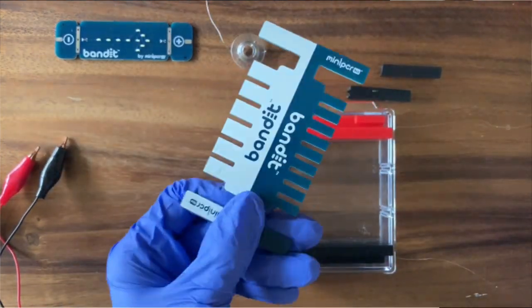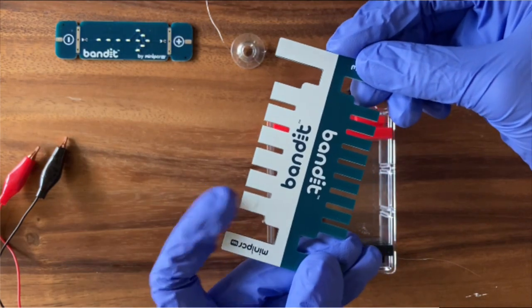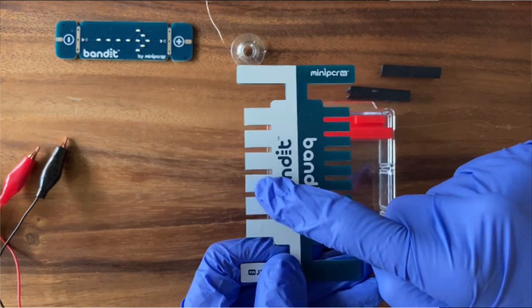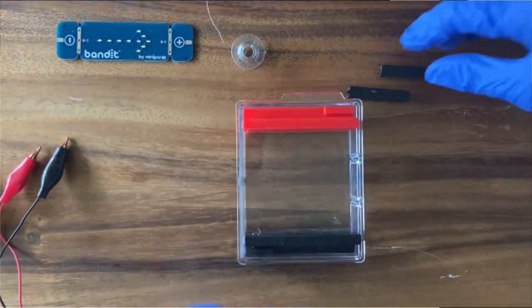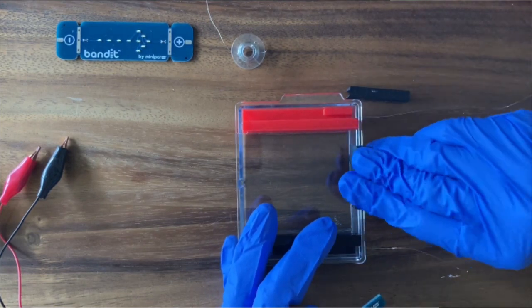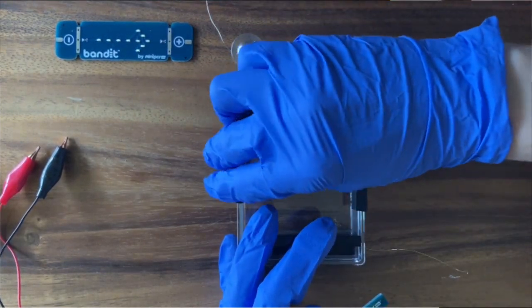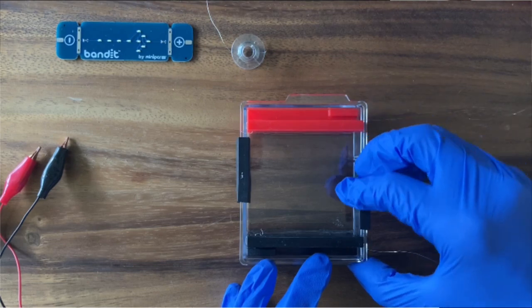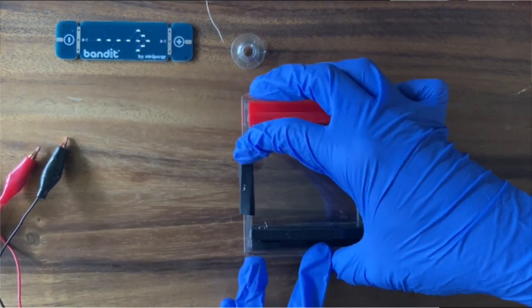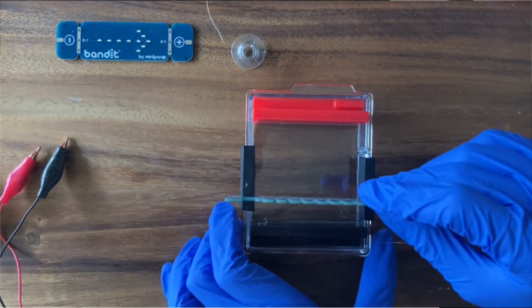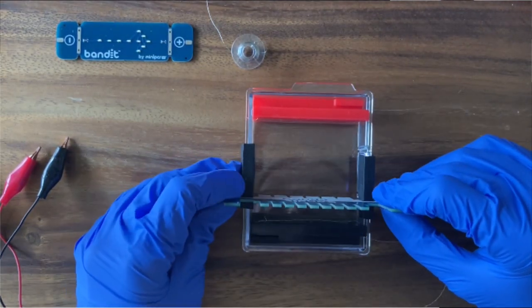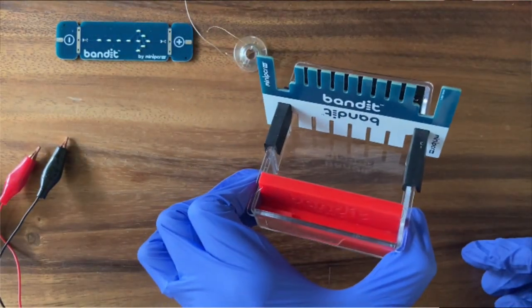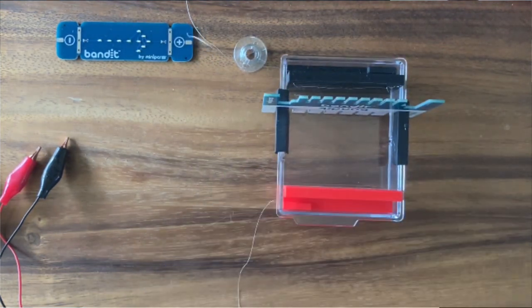To make our wells, we're going to use this comb. Each tooth of this comb is going to make one well. The Bandit comb has a side that can make nine or a side that can make six wells. We're going to use the six well side today. We want our comb to sit up and make pockets. These comb supports go on either side of our buffer chamber and they'll suspend our comb in the molds. If we don't have these comb supports here, the comb teeth will hit the bottom of the buffer chamber. That'll lead us to create holes in our gel rather than the pockets that we want. That is our Bandit system in casting mode.